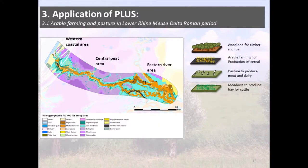Van Dinter and Kooistra divided the landscape into three sub-regions: the western coastal region, the central beach area, and the eastern river area. They identified four land use types: woodland for timber and fuel, arable farming, pasture to produce meat and dairy, and meadows to produce hay for cattle. Importantly, arable farming, pasture, and meadow are simulated to grow, whereas woodland starts at an initial position and declines as more wood is used and areas are deforested.